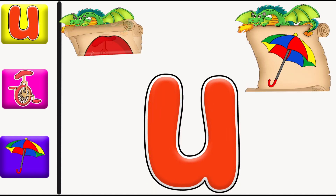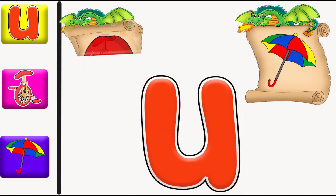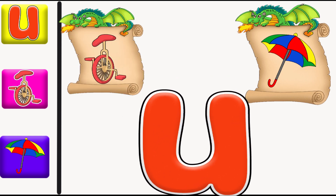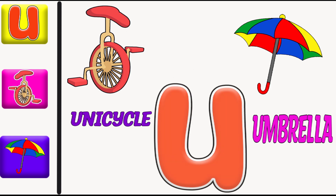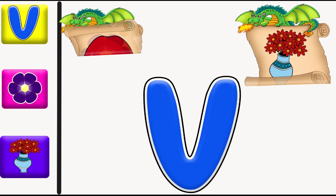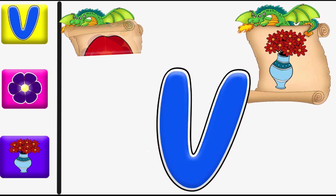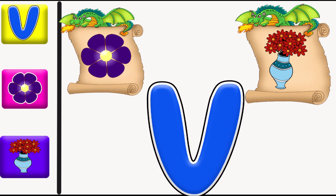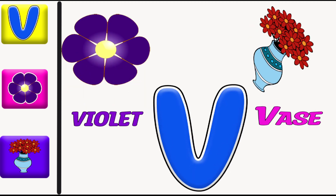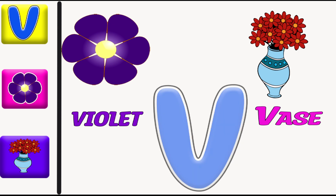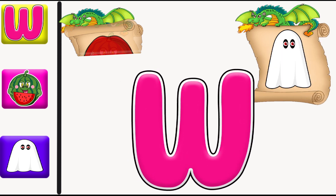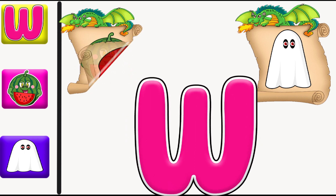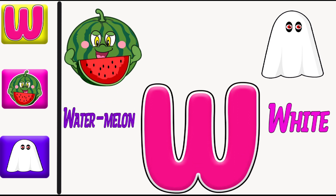U is for umbrella. U, u, umbrella. U is for unicycle. U, u, unicycle. W is for white. W, w, white. W is for watermelon. W, w, watermelon.